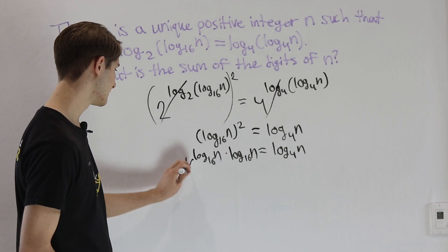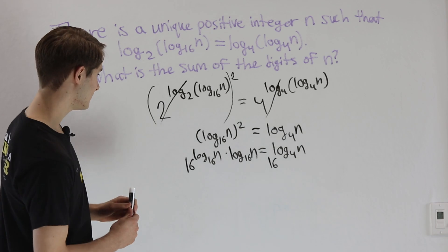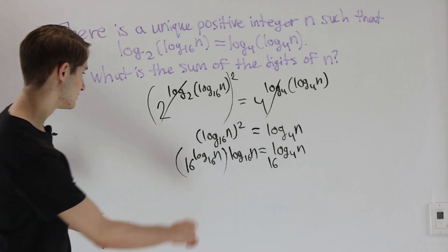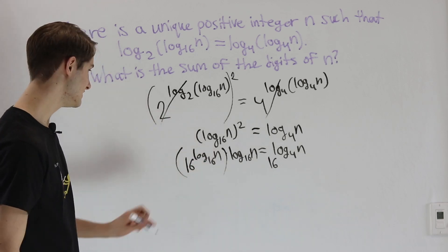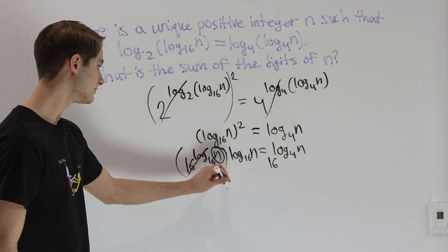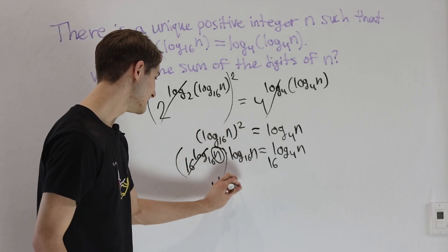Let's see what that looks like. We take 16 on this side and 16 on this side. On the left side of the equation, we can again split up the exponents. We have 16 to the log base 16 of n - those are going to cancel out and give us n as the result, and then raise that to the power of log base 16 of n.